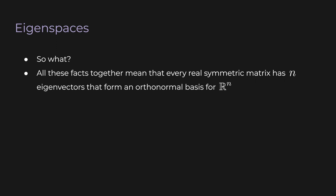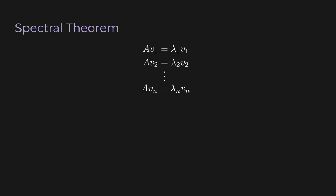All these facts together mean that every n×n real symmetric matrix has n eigenvectors that form an orthonormal basis for R^n. The eigenvectors are orthogonal, unit length, and span all of R^n. Now for the payoff. Let's go back to our eigenvector definition. Let's consider all the eigenvectors of A, normalized to unit length. Each has its own eigenvalue lambda 1 through lambda n — it doesn't matter if they're repeated or distinct, because either way we can always find orthonormal eigenvectors.